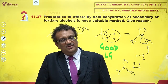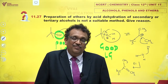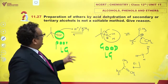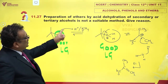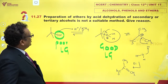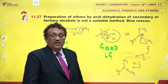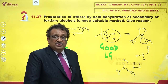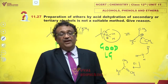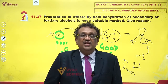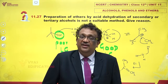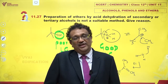Then why take this route? Choose some other route — choose Williamson synthesis, for example. That is why preparation of ethers by acid dehydration of secondary or tertiary alcohols is unsuitable, because they begin to give alkene as a significant and undesirable byproduct in larger quantities by the elimination mechanism.